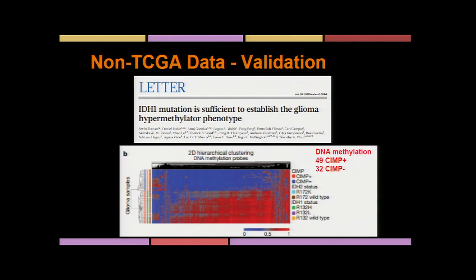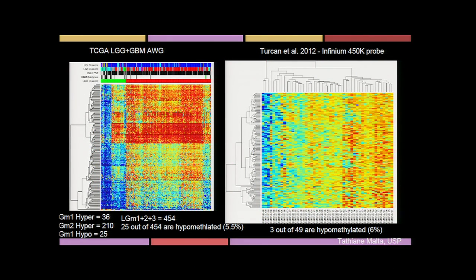We then set out to validate this data, pulling in a DNA methylation dataset recently reported in Nature — all IDH mutant cohorts. Using the same probe set on this non-TCGA dataset, we can see three samples of very low methylation level corresponding to our LGM1 hypo class. In our dataset, we identified 25 LGM1 hypo samples, representing roughly 5.5 percent frequency. In their dataset, 3 out of 49 represent 6 percent — so the frequency is nicely replicated.